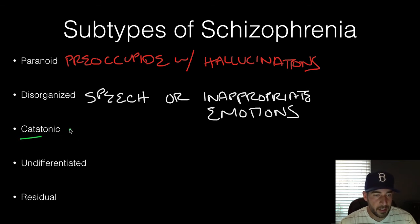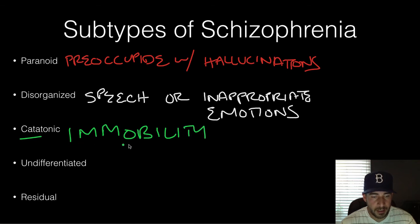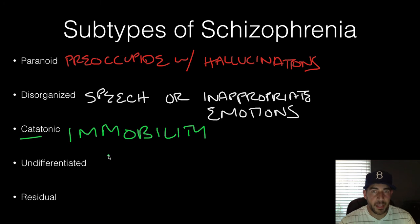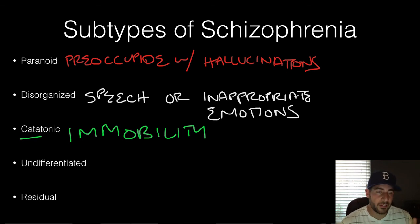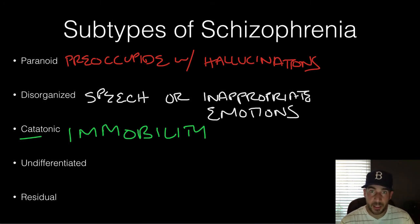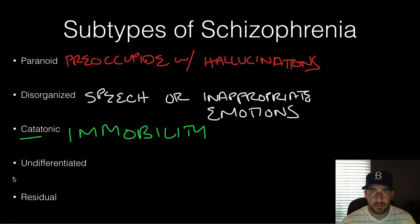Catatonic schizophrenia involves immobility. Someone with catatonic schizophrenia might be talking and then all of a sudden just freeze up and not move — it's kind of crazy to see. They might also have extreme negativism, or they might repeat words or repeat your words and movements. So symptoms include freezing, repeating words or movements, and being extremely negative.